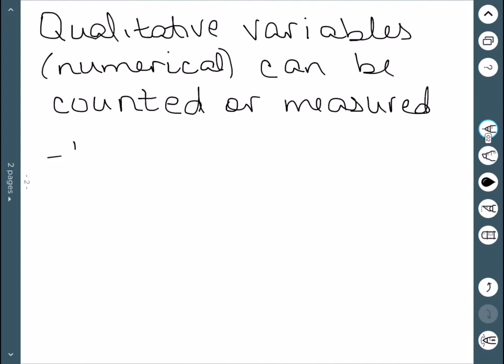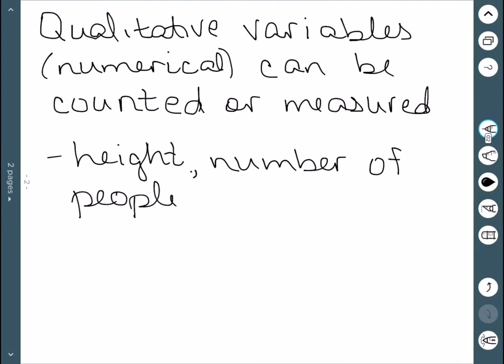For example, height is something that we measure, or we can look at the number of people in a room. And this would be something that we count instead. So these are any kind of numerical values.